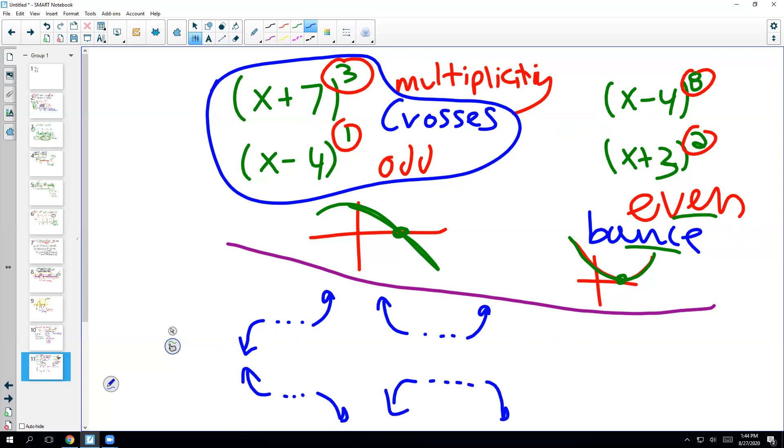And the thing that determines these end behaviors is the leading coefficient and the degree. So you need to know the leading coefficient and the degree of the polynomial to figure this out. So what did I talk about leading coefficient and degree? Well, if you have a polynomial like 7x cubed minus 5x squared plus 3x plus 1, the leading coefficient is 7, and the degree is the 3. So you're just looking at this first term.